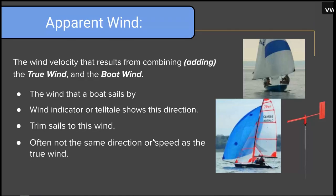The last of the three is the apparent wind. The apparent wind is the wind velocity that results from combining or adding the true wind and the boat wind. This is the wind that the boat actually sails by — the wind indicators and telltales show this direction, we trim our sails to it, and it is often not the same direction or speed as the true wind.